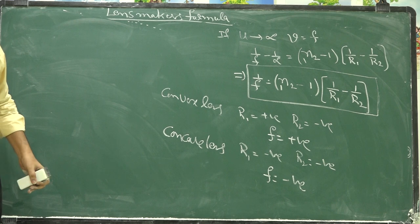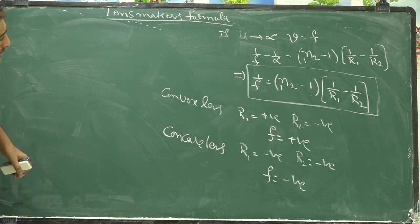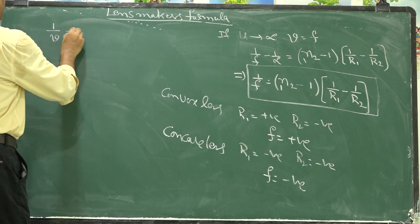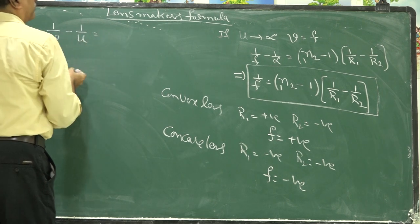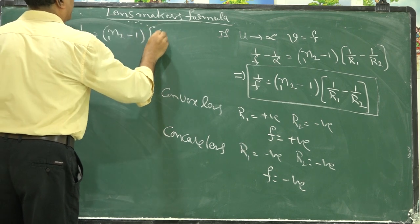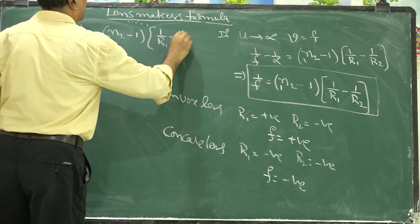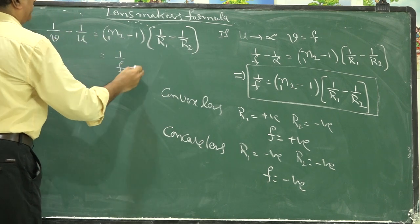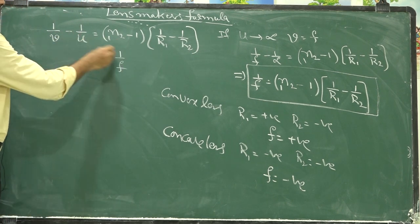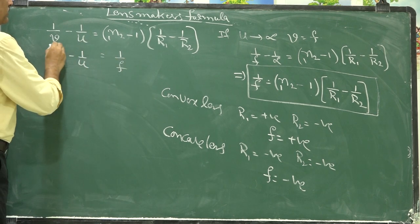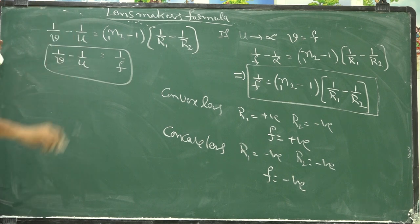From the derived relation, 1/V minus 1/U equals (n21 - 1)(1/R1 - 1/R2), which equals 1/f. Therefore, the lens equation is: 1/V minus 1/U equals 1/f.